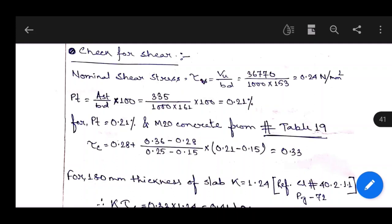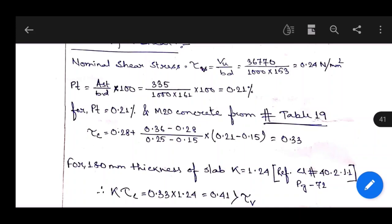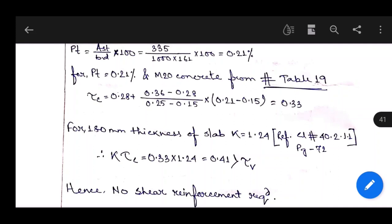For 180 mm thickness of slab, k coefficient is 1.24 from clause 40.2.1.1 of IS 456:2000 page 72. k times tau_c equals 0.33 times 1.24, equals 0.41, which is greater than tau_v. Therefore, no shear reinforcement is required because there is no excess shear.